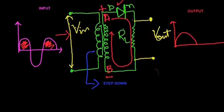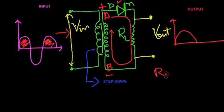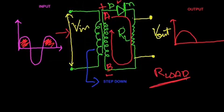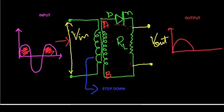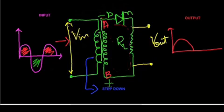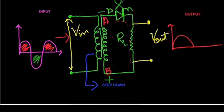RL stands for load — it means whatever device is connected. When the AC negative half cycle enters from Vin, terminal A will be at negative potential and terminal B will be at positive potential, making this diode reverse biased. Hence the current will not flow and will not be conducted in this circuit, so you will get no output.